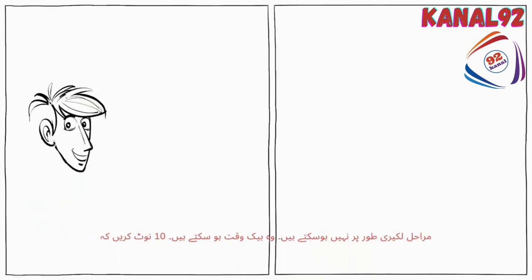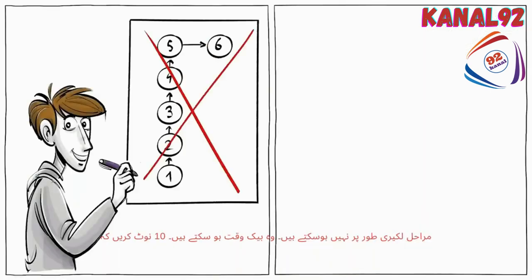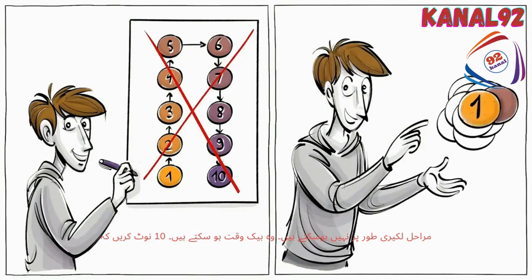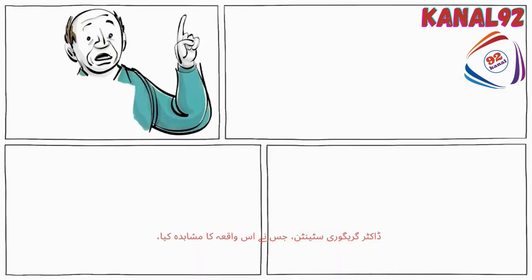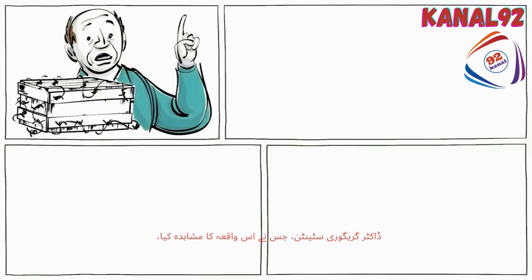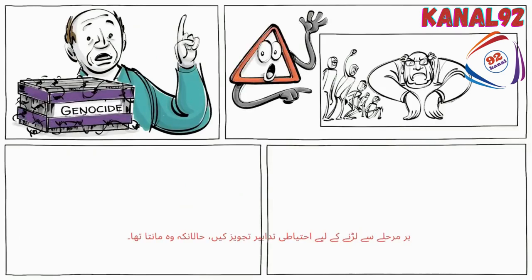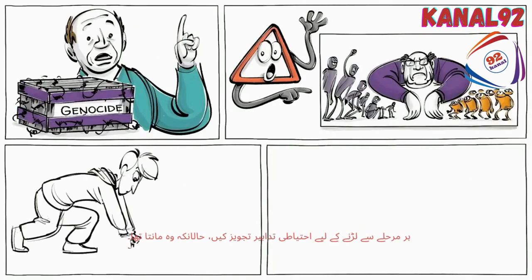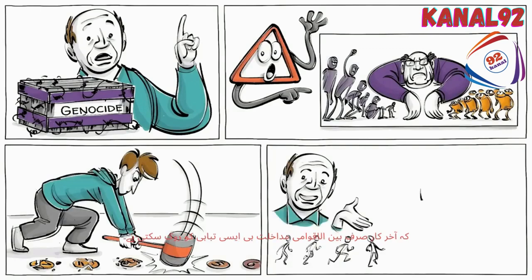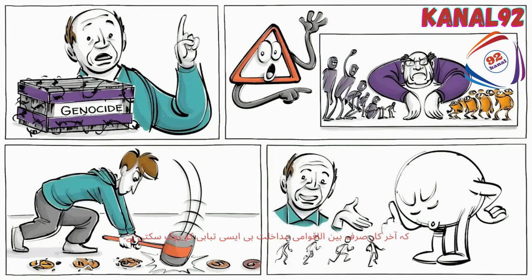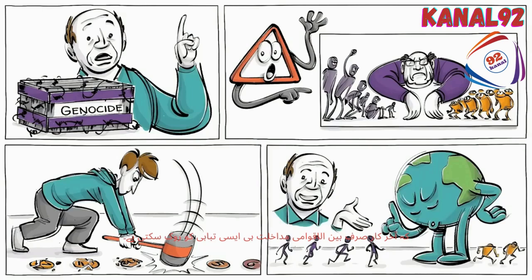Note that the ten stages may not occur linearly — they can happen simultaneously. Dr. Gregory Stanton, who observed the phenomenon, suggested preventative measures to battle each stage, even though he believed that ultimately only an international intervention can stop such a disaster.